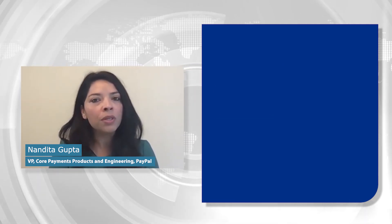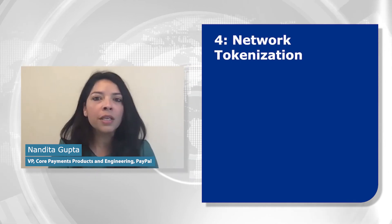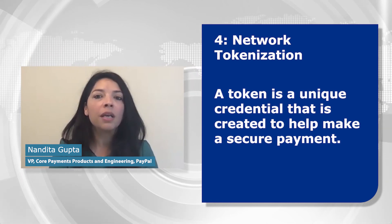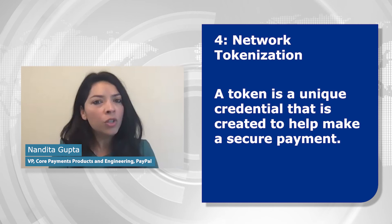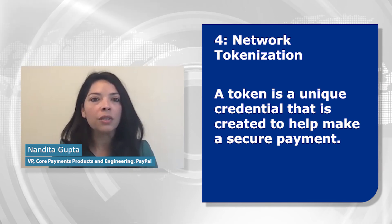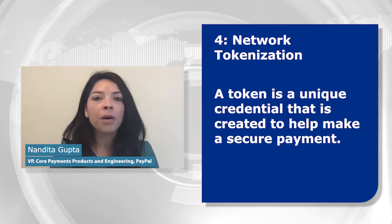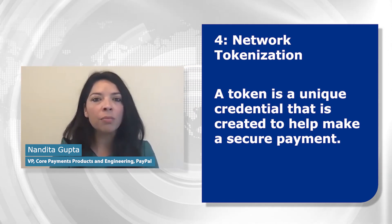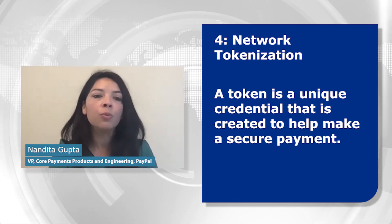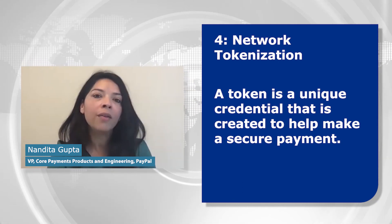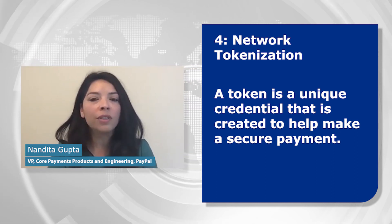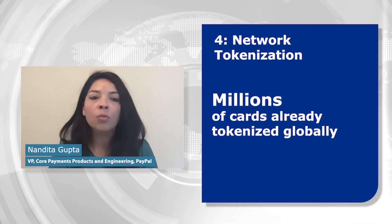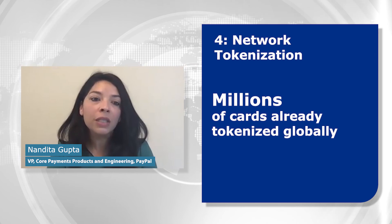The fourth, and very important, is network tokenization. Network tokenization works by creating a unique credential for a card that is separate from that 16-digit card number imprinted on your physical card, which can now be used for conducting transactions. This is really valuable in the case that a card is expired, lost, stolen, or even breached at another merchant. With a network token being automatically updated by PayPal, the customer can continue to purchase securely and without interruption. PayPal has one of the largest network token vaults with hundreds of millions of cards being tokenized in key global markets, a number that's really increasing daily.